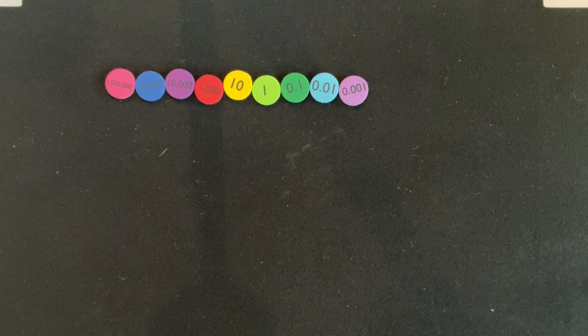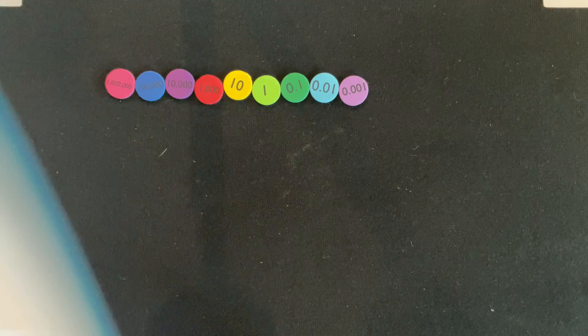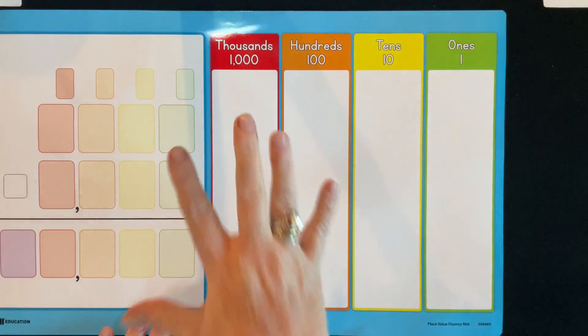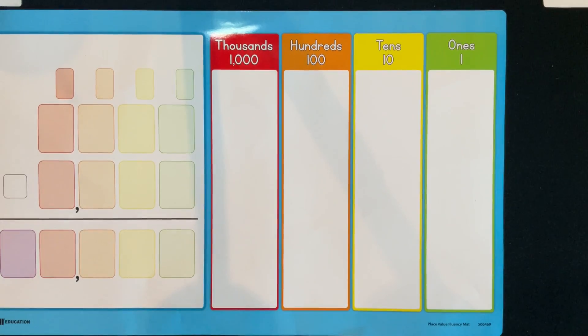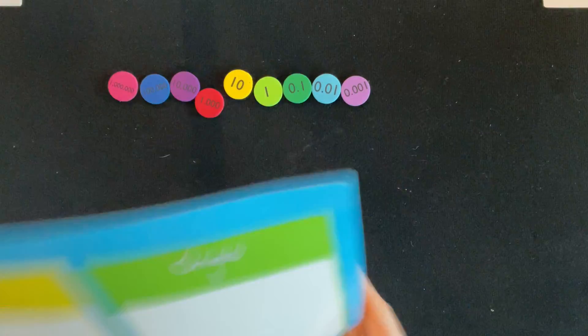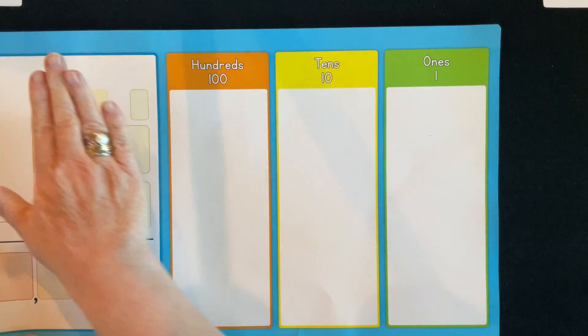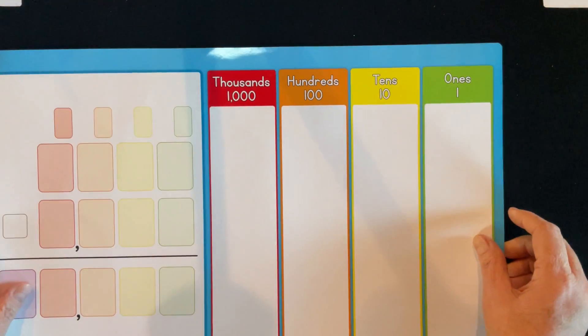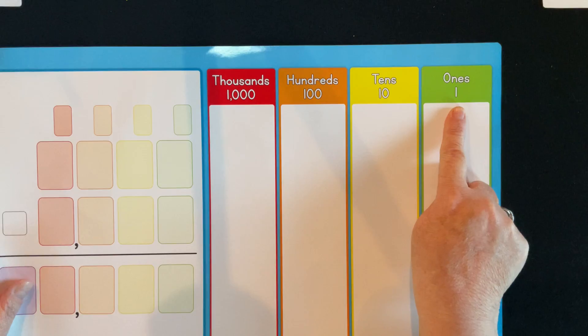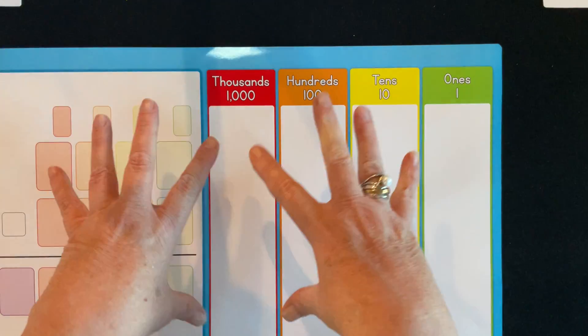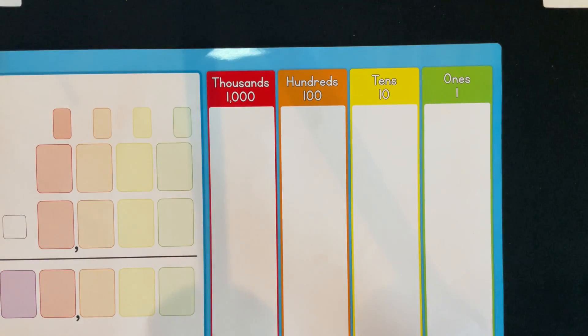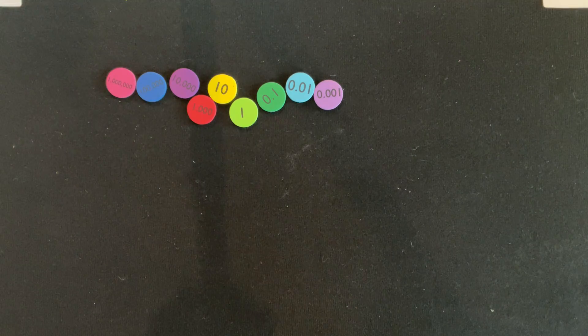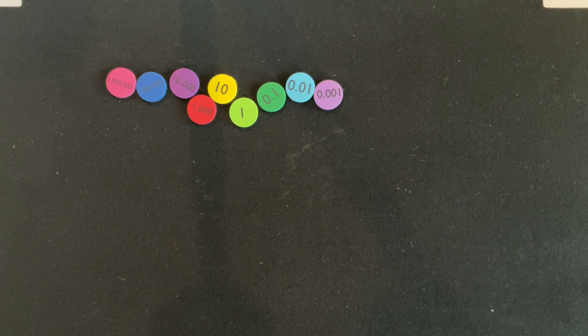When we mention this place value chart, yes, this one goes to thousands. There is another place value chart that actually starts on this side and goes from one to millions. When you turn it on the back, it actually goes from thousands to thousandths. You would use that side of that place value mat to work with students at upper grade levels in elementary with decimals.